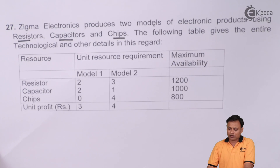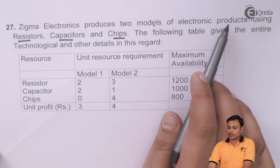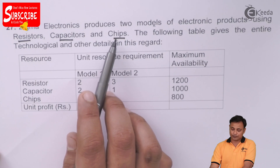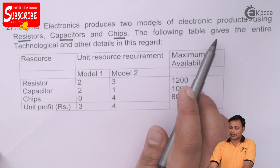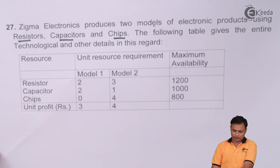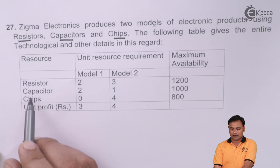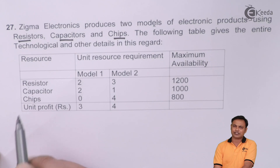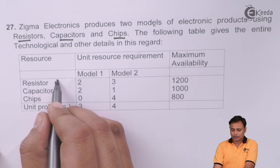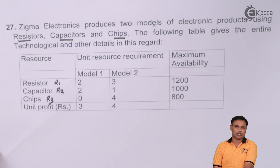Sigma Electronics produces two models of electronic products using resistors, capacitors, and chips. The following table gives the entire technological and other details. You are given the resources with the technical names resistor, capacitors, and chips. If you are confused, you can just name them as resource 1, resource 2, and resource 3.